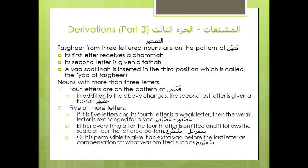If the noun is five or more letters: firstly, if it is five letters and its fourth letter is a weak letter, then the weak letter is exchanged for a Ya, as in Osayfir. Second, either everything after the fourth letter is omitted and it follows the scale of the four-lettered pattern, for example Sufayirij, or it is permissible to give it an extra Ya as compensation for what was omitted before the last letter, also as in Sufayirij.